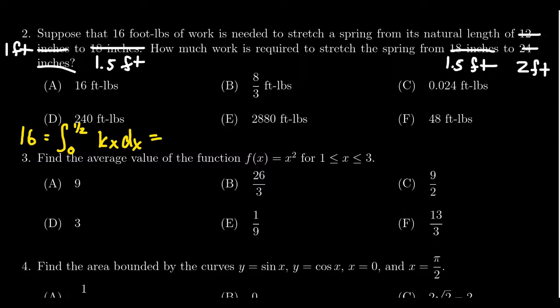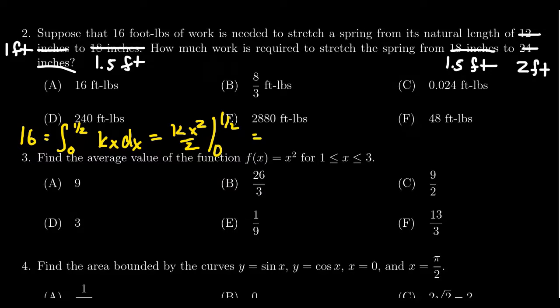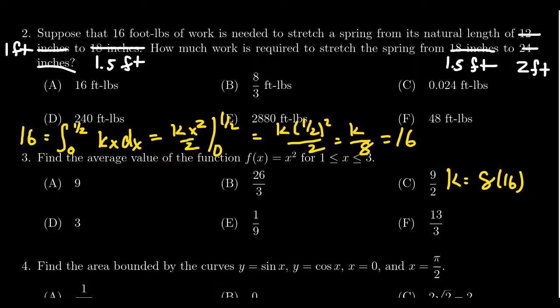If you find the antiderivative, you're going to get kx squared over 2 as you evaluate from 0 and 1.5. Plug in 0, just make everything disappear. When you plug in the 1.5, you square that, and so you end up with k over 8. Remember, this is equal to 16. So when you solve for k in this situation, k is going to equal 8 times 16, which would give you 128.